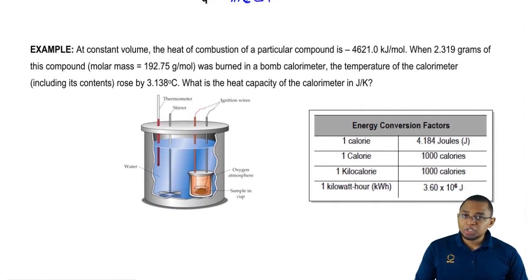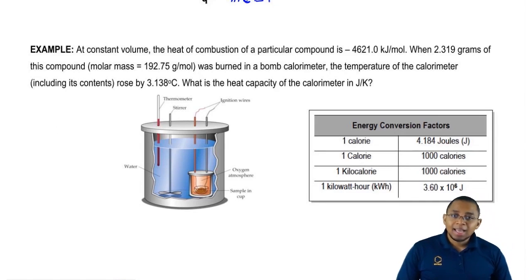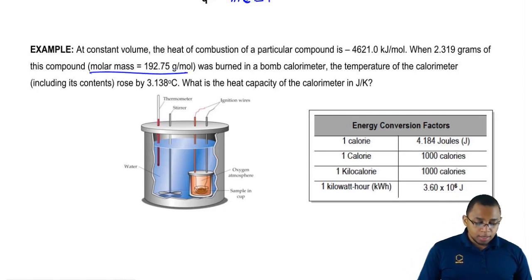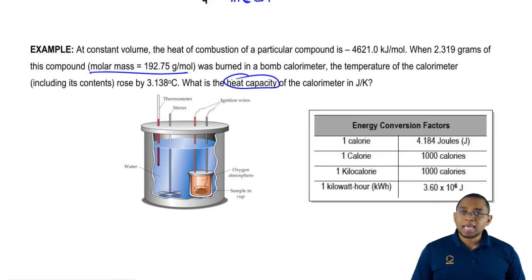Based on the concepts we just looked at, let's take a look at this question here. It says at constant volume, the heat of combustion of a particular compound is negative 4621.0 kilojoules per mole. We say when 2.319 grams of this compound, remember it has a molar mass that I give to you, was burned in a bomb calorimeter. The temperature of the calorimeter including its contents rose by 3.138 degrees Celsius. What is the heat capacity of the calorimeter in joules over Kelvin?